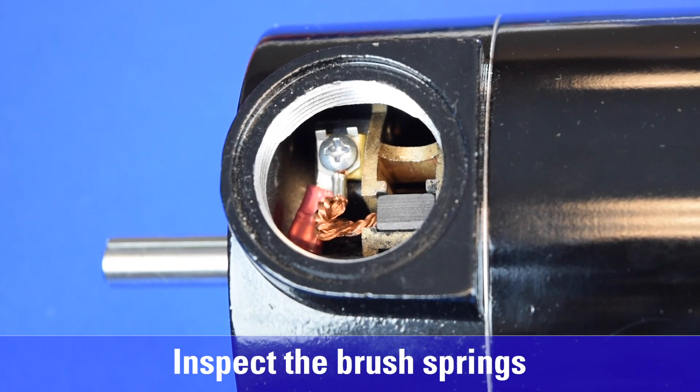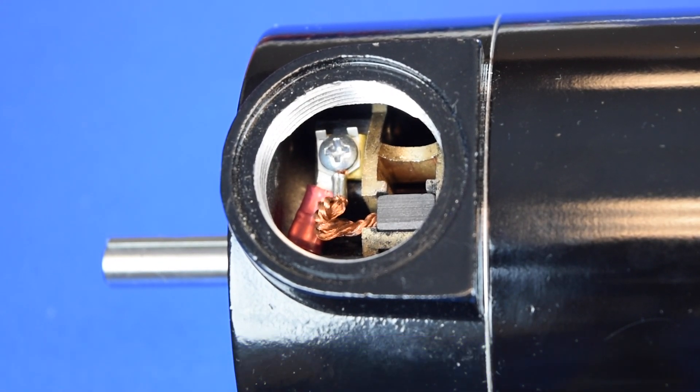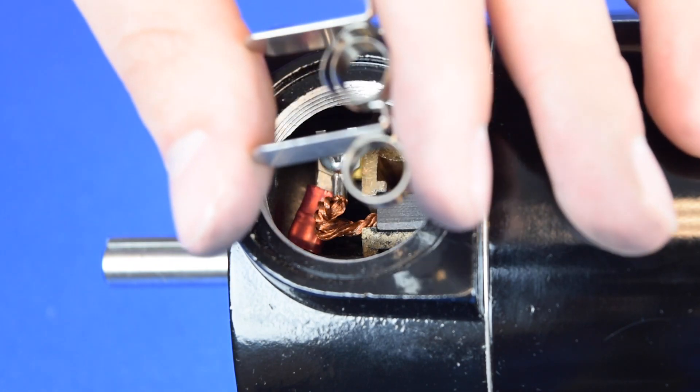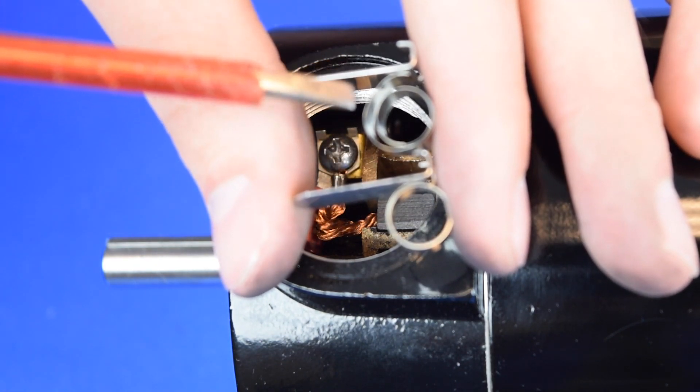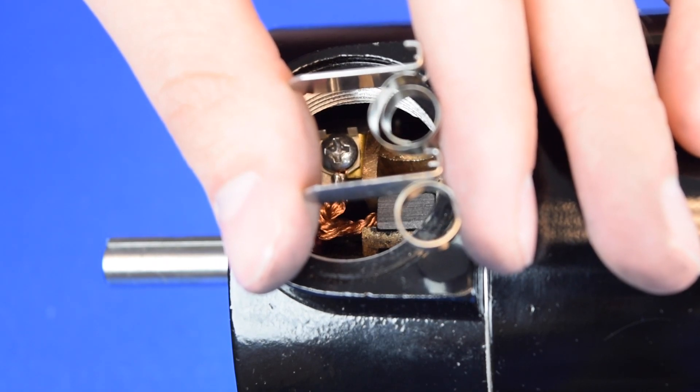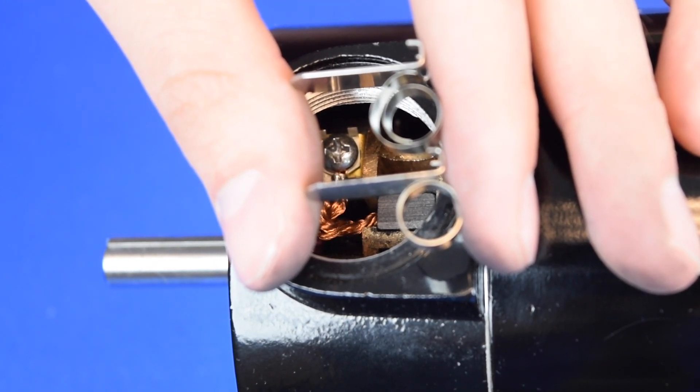Before installing the brush springs, we need to inspect them to make sure they weren't damaged during their removal. If they are uncoiled or otherwise damaged, the springs need to be replaced as well. In general, we recommend to replace both brushes and springs as a set.